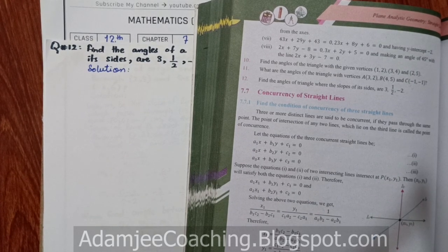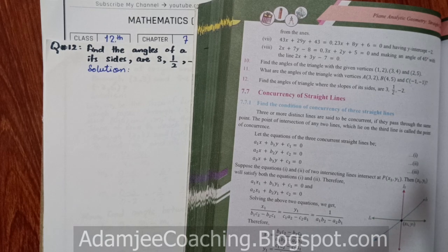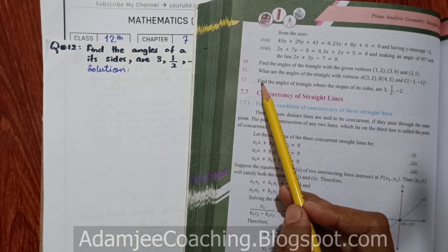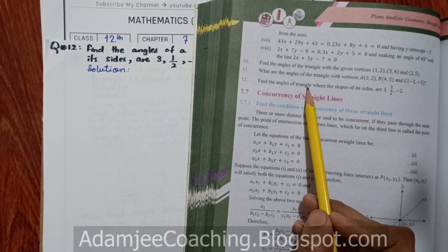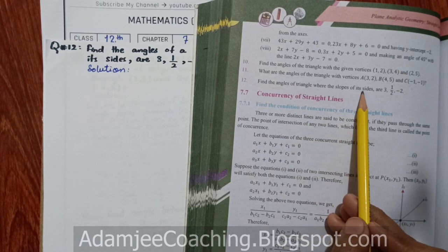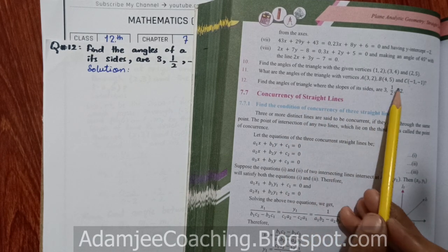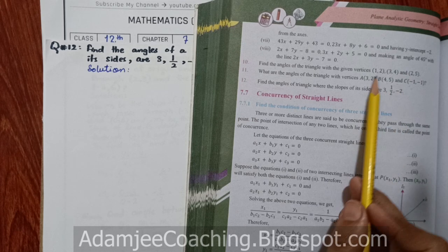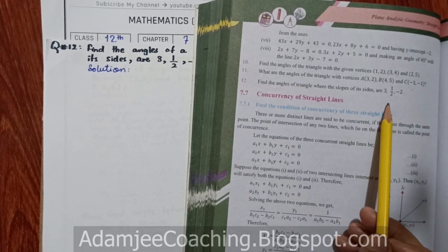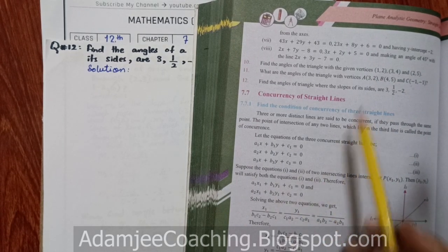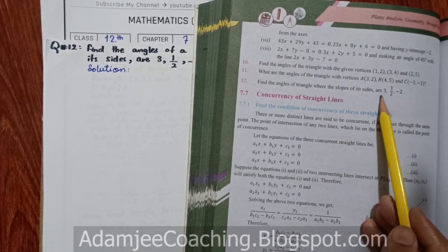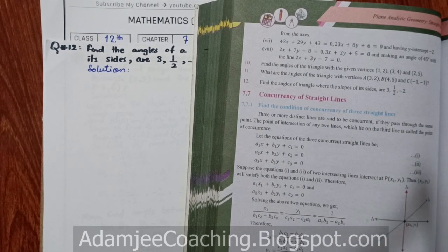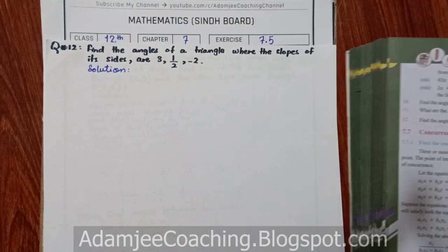Assalamu Alaikum. Class 12 Exercise 7.5, Question 12: Find the Angles of Triangles. You have to find the angle of a triangle where the slopes of its sides are already given. In the last two questions you had to find the slopes first and then find the angles, but here the slopes are given and we directly find the angles. Let's start.